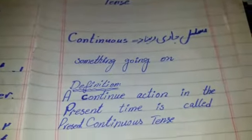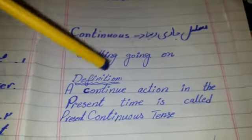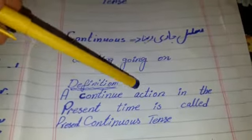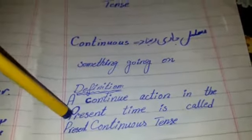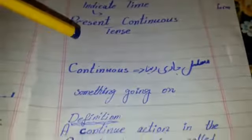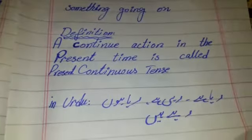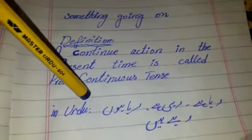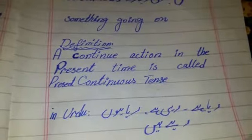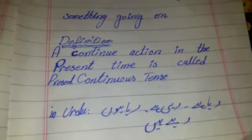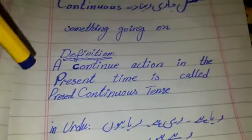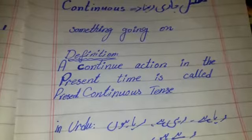So there are many examples that I have discussed with you. Present continuous tense means something going on but not completed. The definition is: a continuing action in the present time is called present continuous tense. Present continuous tense means the action is going on but not completed. Here are the Urdu formation examples which also indicate that it is present continuous tense — so we are all familiar with it.